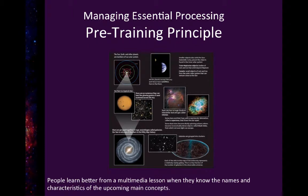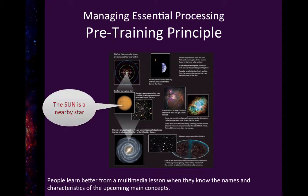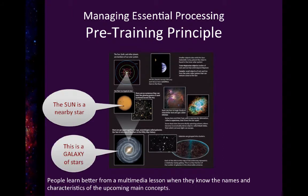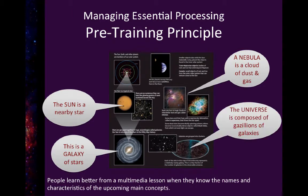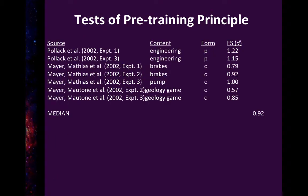It's not just segmenting that's important — we also know that pre-training students can really help. Here's a diagram from a common textbook with a lot of information. We can help students process it not only by segmenting, but by giving them an overview first. For example: the sun is a nearby star just like many others; a galaxy is not a single star but hundreds of millions, if not billions of stars; there are also clouds of gas floating in outer space; and putting all these things together, we get the universe. Now that we have some basic terms, let's go back and look at this in more detail. This pre-training principle helps students focus on what's most important and helps them retain better.